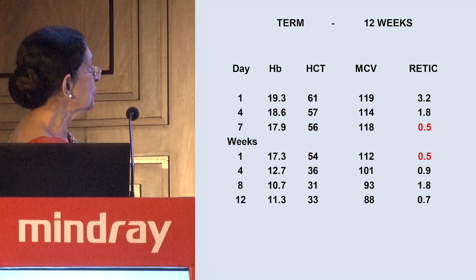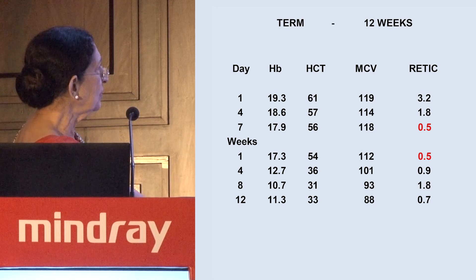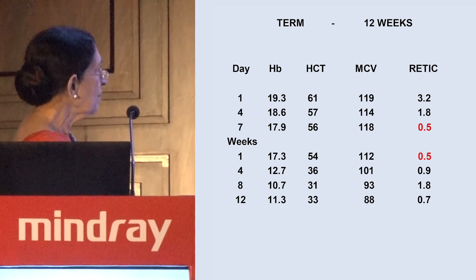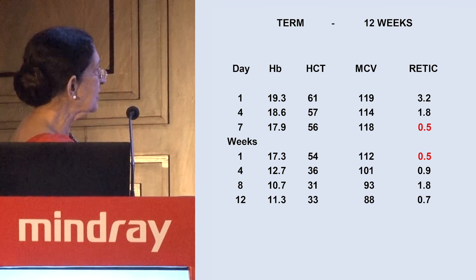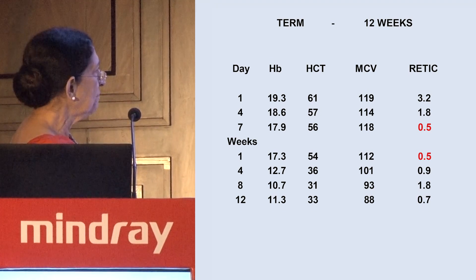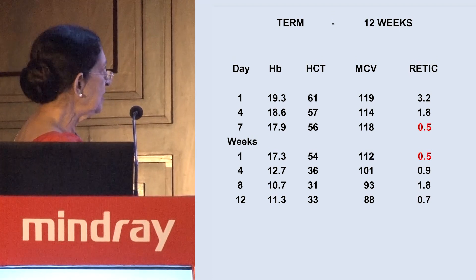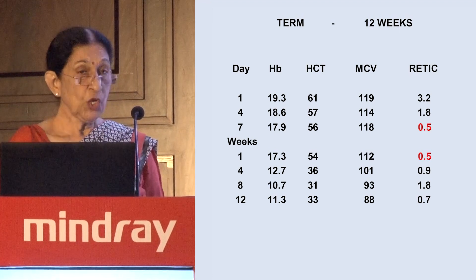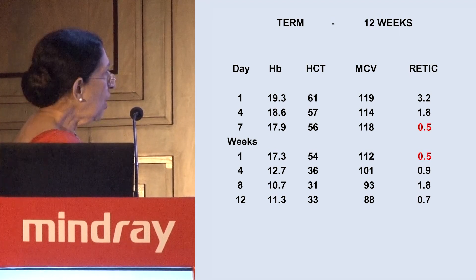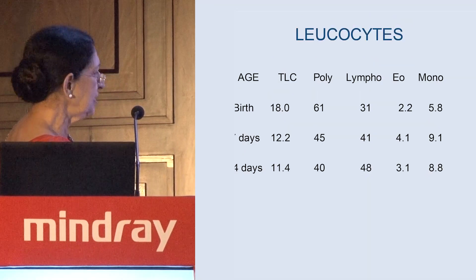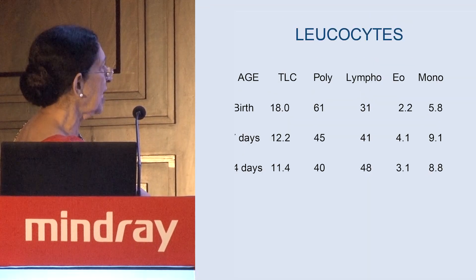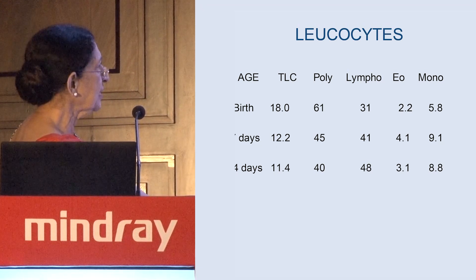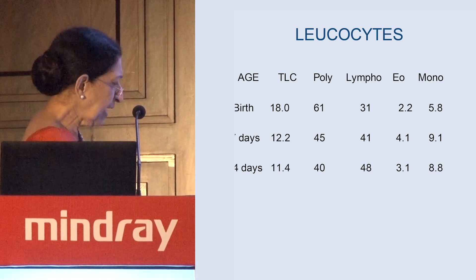On day 1, the retic has come down to 3.2. By day 7, it is only 0.5%. Other parameters are also falling, and with that 0.5% retic, by 12 weeks the baby's hemoglobin has come down — but do we call this baby anemic? No. That is how we interpret these cases. WBCs are always a little on the higher side. Birth neutrophils are high, but within seven days they equalize. That is their normal pattern.